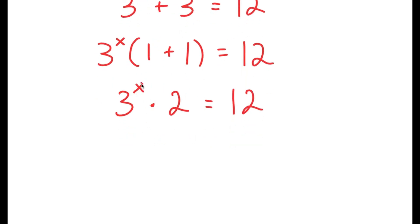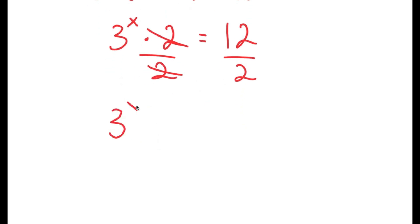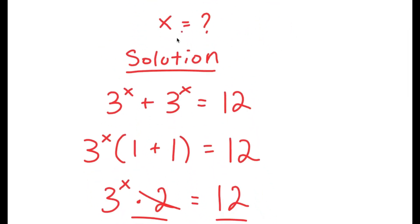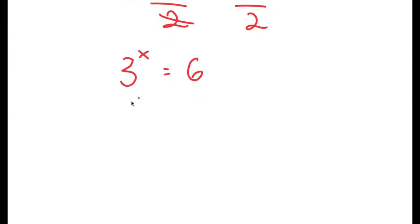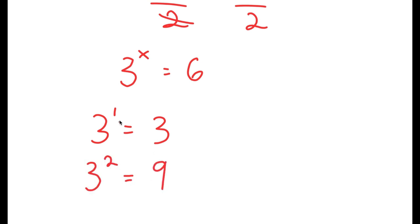From here, we want to isolate x. To do that, we have to get rid of this times 2 by dividing both sides by 2. So these two cancel out, and I am left with 3 to the power of x is equal to 12 divided by 2, which is 6. So now I have 3 to the power of x is equal to 6. We know that x is going to be a decimal because 3 to the power of 1 is 3 and 3 to the power of 2 is 9, so x is going to be somewhere in between 1 and 2.